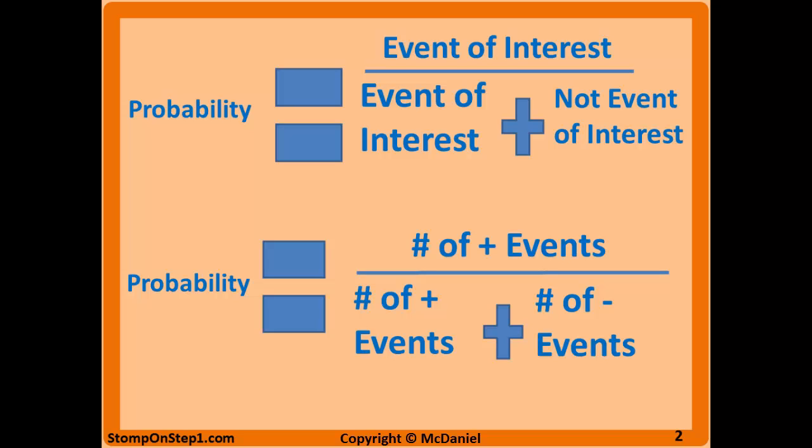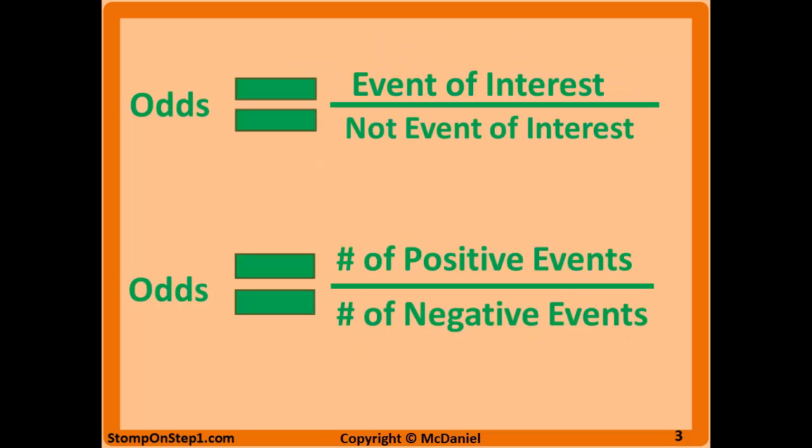Or you can think of it as the number of positive events divided by the number of positive events plus the number of negative events. Odds on the other hand is the ratio of the likelihood of an event happening compared to the likelihood of an event not happening. So it would be the event of interest divided by the event of interest not happening, or the number of positive events divided by the number of negative events.